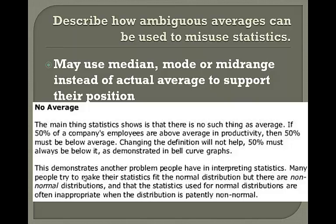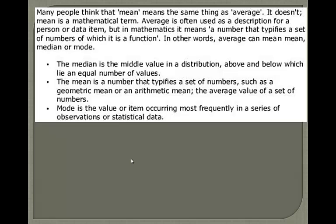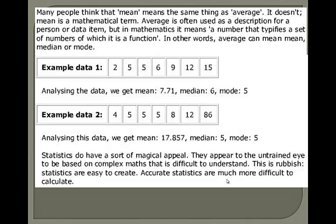Many people try to make their statistics fit the normal distribution — the bell curve — but there are non-normal distributions where the humps are to the left or right, and statistics used for normal distributions are often inappropriate when the distribution is non-normal. Many people think mean is the same as average; mean is actually a math term. Here's example data: the mean can be representative of the data at 7.71. But in a second data set — 4, 5, 5, 5, 8, 12, 86 — the 86 is way out there as an outlier, and there's only one number above the mean of 17. You might have what's called an outlier, which we'll get to later in the course.